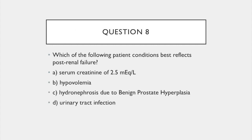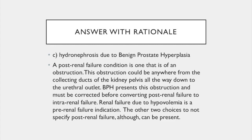Question 8. Which of the following patient conditions best reflects post-renal failure? A. Serum creatinine of 2.5 milliequivalents per liter. B. Hypovolemia. C. Hydronephrosis due to benign prostate hyperplasia. Or D. Urinary tract infection. The answer is C: hydronephrosis due to benign prostate hyperplasia. A post-renal failure condition is one that involves an obstruction, which could be anywhere from the collecting ducts of the kidney pelvis down to the urethral outlet. BPH presents this obstruction and must be corrected before converting post-renal failure to intra-renal failure. Renal failure due to hypovolemia is a pre-renal failure indication.